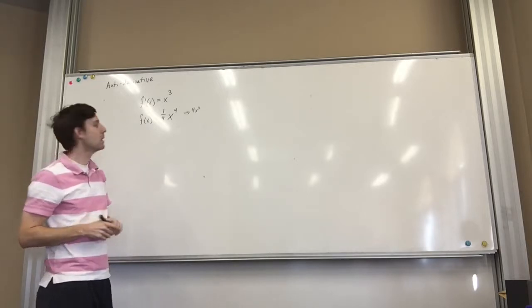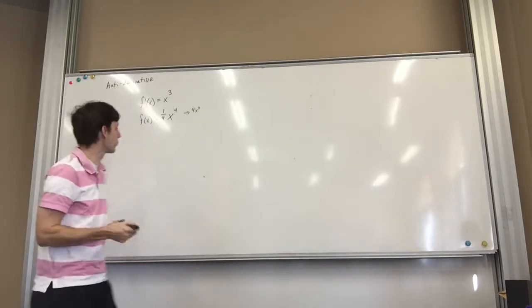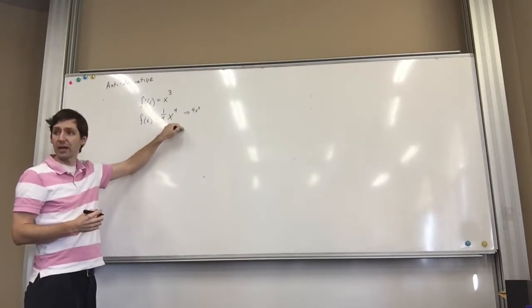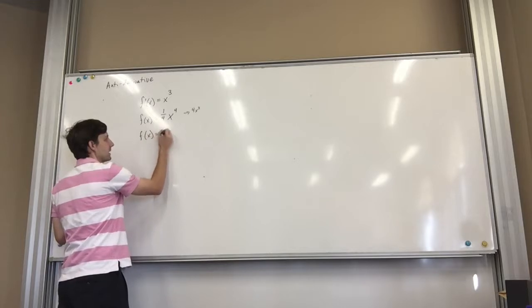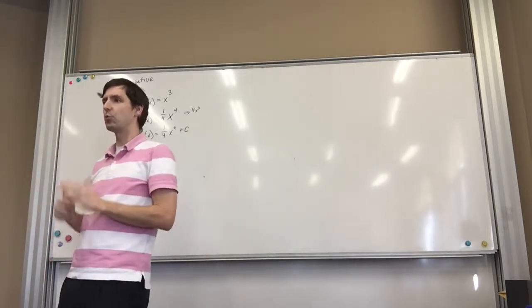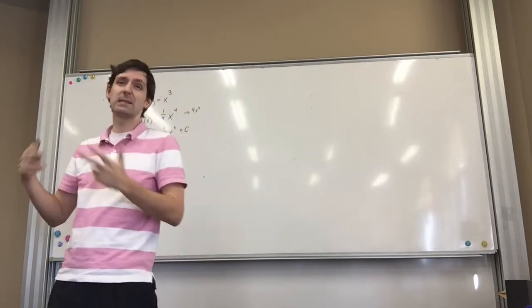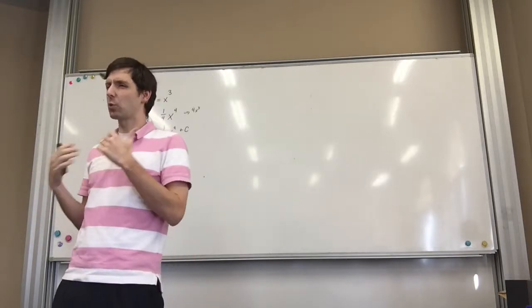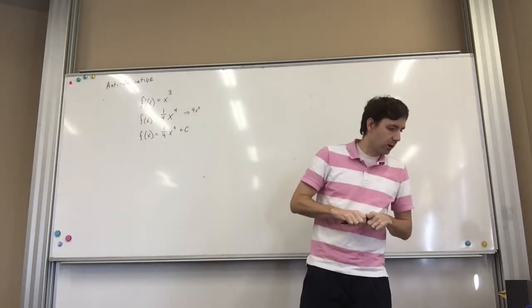How about the constant? When we're dealing with an anti-derivative, you don't technically need the constant, but we will get to the point where we say this originally could have had a constant on it — some whole number that when I took the derivative, it went away. So very often we'll say f of x equals one-fourth x to the 4th plus C, to show we understand there could be a constant there. It could be zero, but there could be a constant. We don't know what it is unless we have more information.